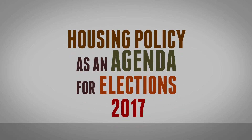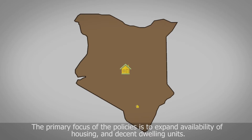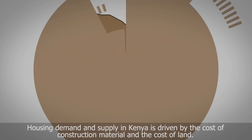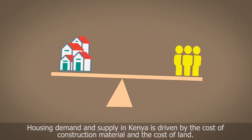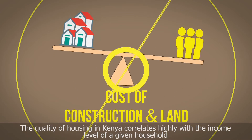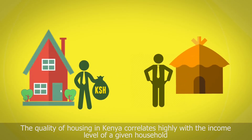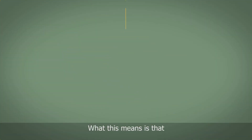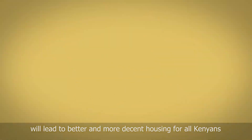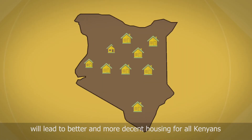Housing Policy as an Agenda for Elections 2017. The primary focus of housing policy is to expand availability of affordable housing and decent dwelling units. Housing demand and supply in Kenya is driven by the cost of construction material and the cost of land. The quality of housing in Kenya correlates highly with the income level of a given household. A faster growth in real income will lead to better and more decent housing for all Kenyans.